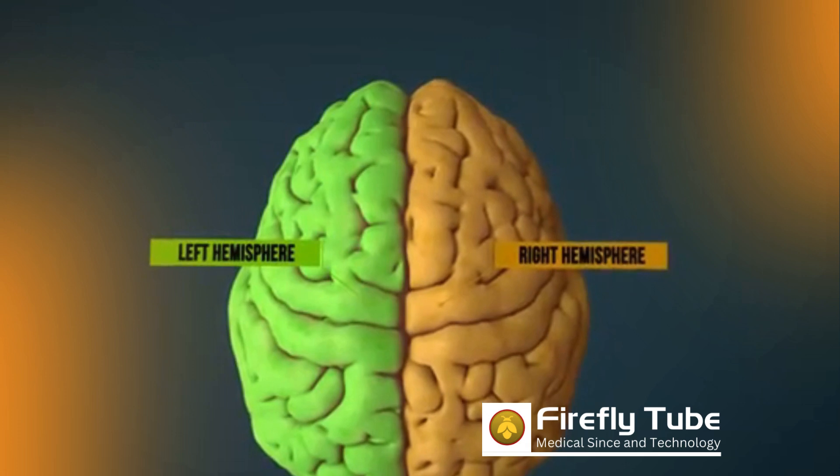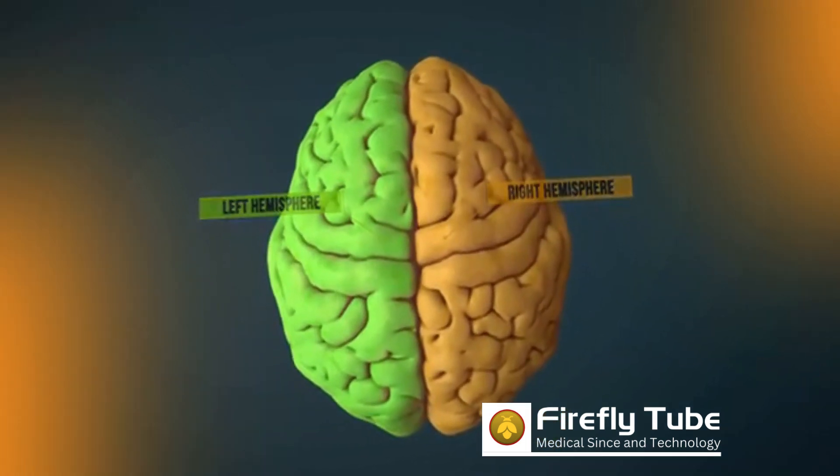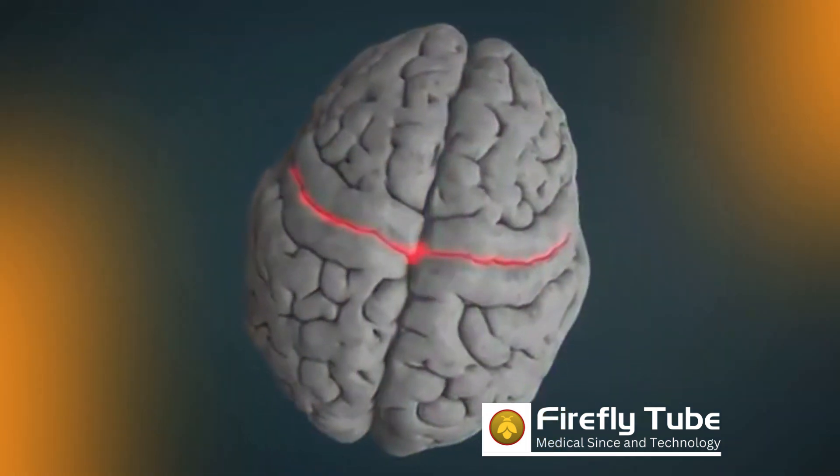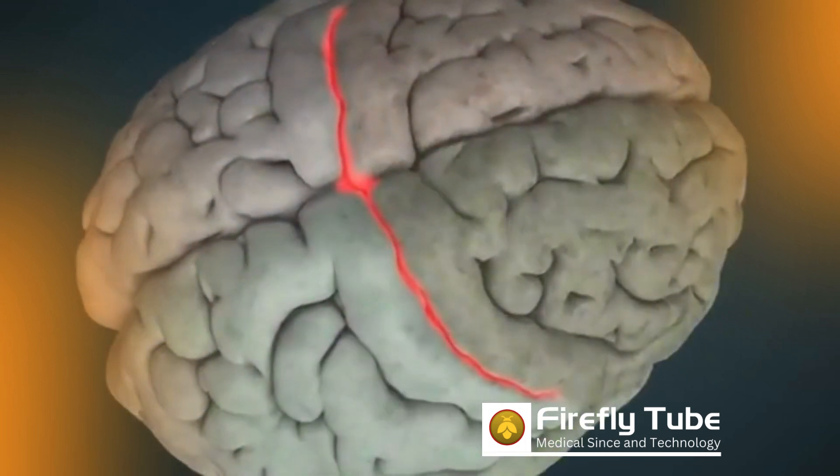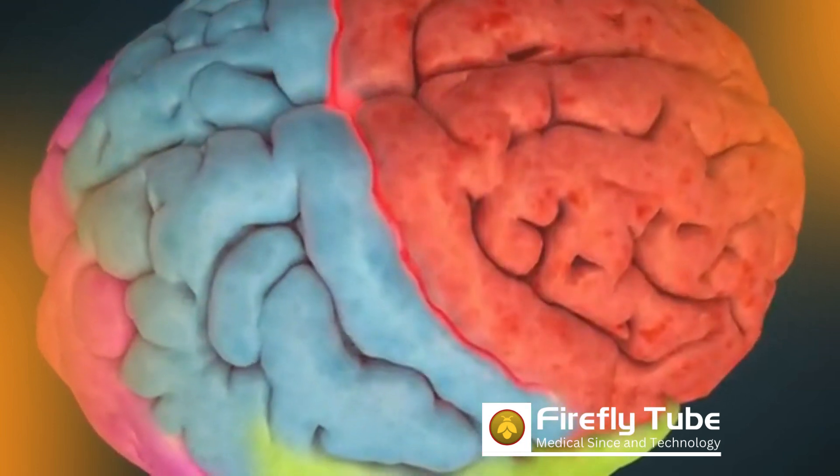Both hemispheres are divided into areas. The central sulcus, here is red here, separates the frontal lobe from the parietal lobe. There is also a temporal lobe and an occipital lobe.